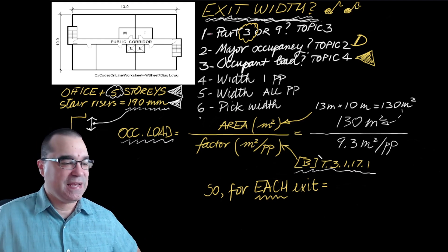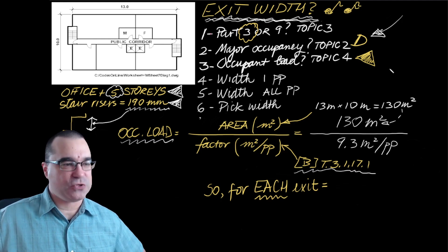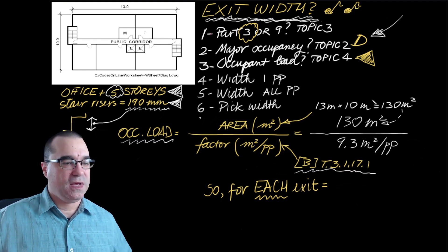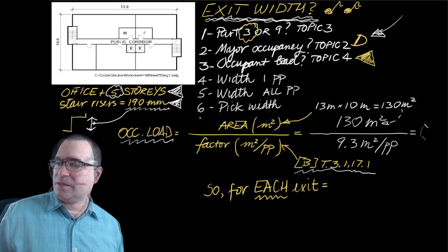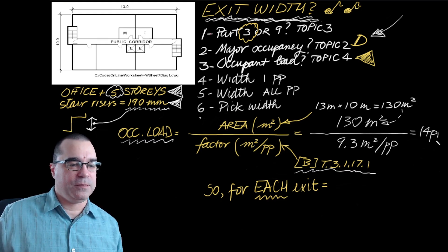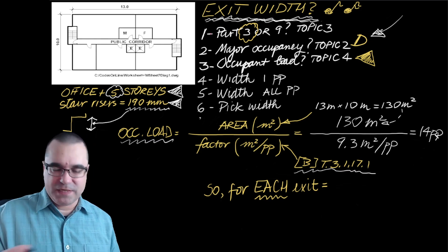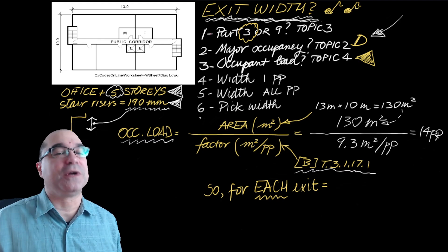So I just went to this table and I looked for office under D major occupancy, business and personal services. 9.3 meters squared per person. So when I divide these two numbers, I get 14 people. I take those two numbers, divide them by each other, and I round up because people are whole numbers.